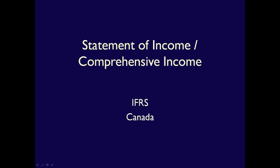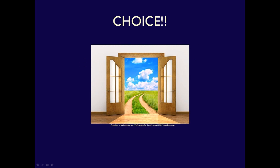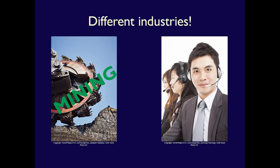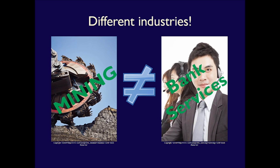Back to the Statement of Income, Comprehensive Income for Intermediate Accounting. It's important to understand that IFRS allows a lot of freedom with regards to the format of financial statements. The objective of financial reporting is to provide financial information useful for decision-making — generally decisions that investors, lenders, and other creditors make about money. The information a mining company needs to provide may not be the same as a bank, because the industries differ in significant ways. Different industries need to show different things to be useful to their stakeholders.